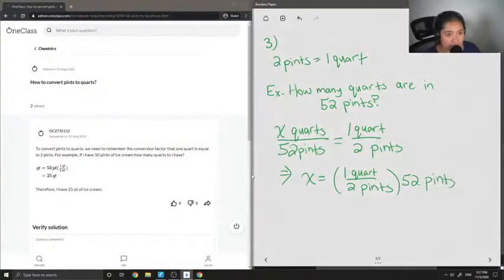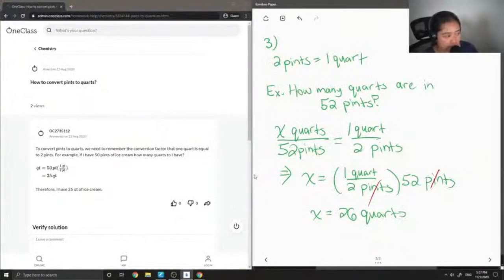So you'll see here that our pints will cancel out and we're left with a value in quarts. So all it is is 52 divided by 2, so there are 26 quarts in 52 pints.